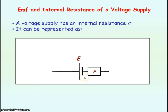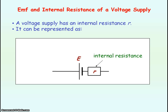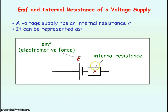We can represent this by having a resistor symbol next to the symbol for the cell or power supply. The resistor we will label as little r for the internal resistance. We say our cell has an electromotive force, an EMF, given by symbol E, representing the voltage across the power supply or cell.